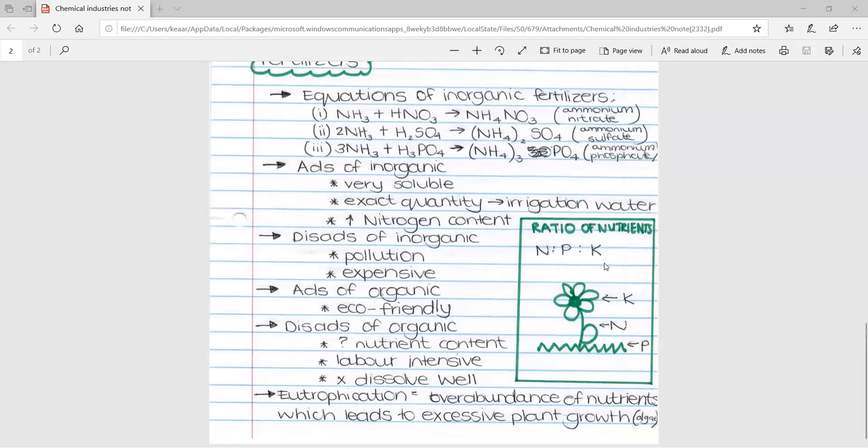And then this is a little diagram which helps you remember what each nutrient is important for and is needed for. It starts off with K at the top. Potassium is used for the flowering of your plants. So, it's needed to strengthen the flowers and to form fruit and flowers.